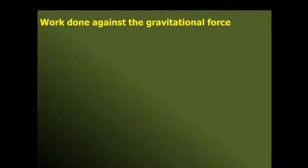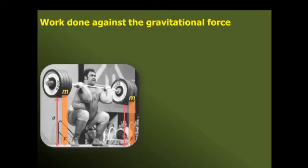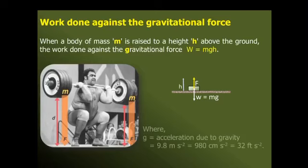We are going to be against the gravitational force. When a body of mass rises to a height above the ground, the work done against the gravitational force is calculated. This is the acceleration due to gravity, which is 9.8 m/s².